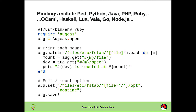Augeas is a C library, but we have bindings for many other languages. Here we see a Ruby example, where we loop through each of the mount points in fstab and print out a line for each one. We then make the same change we did on the previous slide, and save.